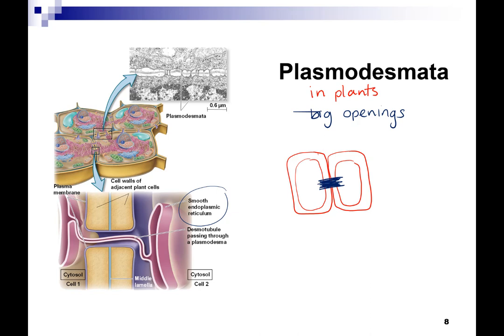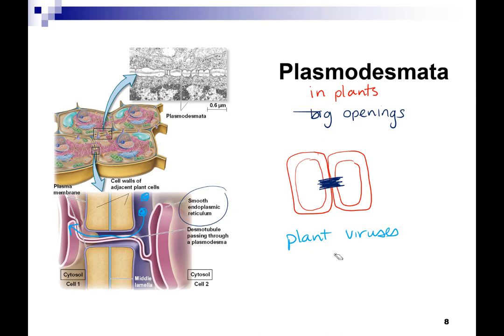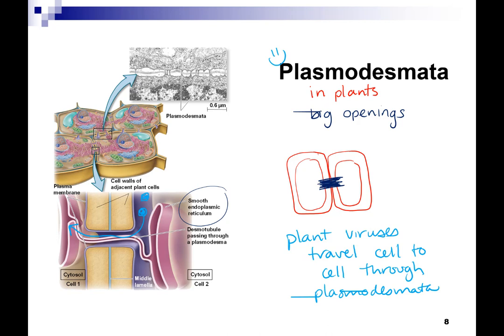The reason plasmodesmata is my favorite word is that this is how plant viruses travel — cell to cell through the plasmodesmata. So this is an example of direct intercellular signaling in plants. You don't have to know it, but it is my favorite word. That's direct intercellular signaling.